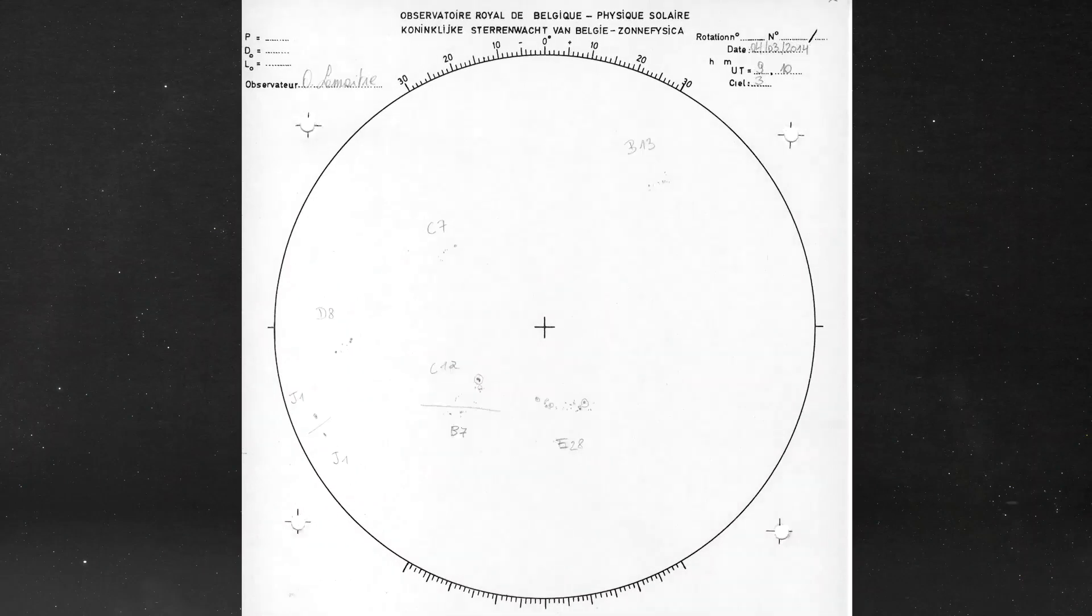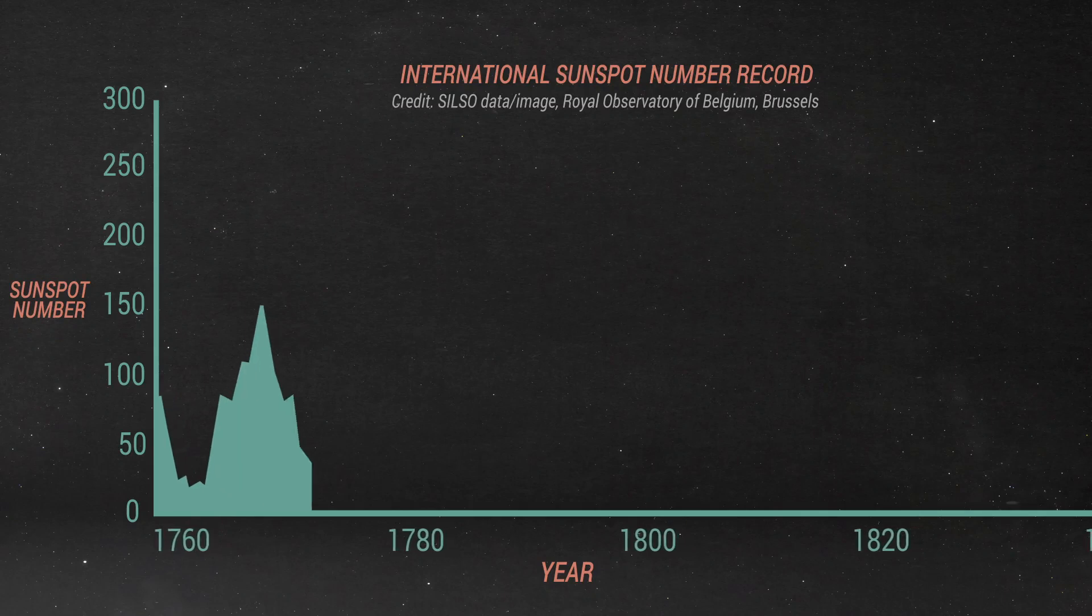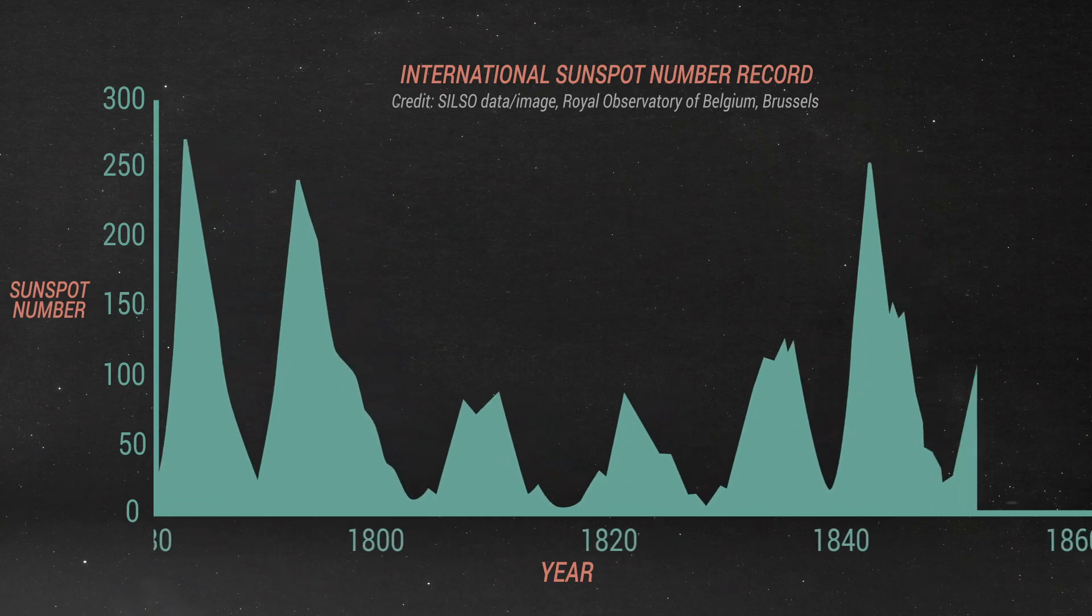While we've created satellites that can see the sun in much more detail in recent decades, drawing by hand keeps the centuries-long record consistent. The sunspot number record goes back farther than any other instrument, allowing scientists to analyze the sun's behavior over many, many solar cycles.